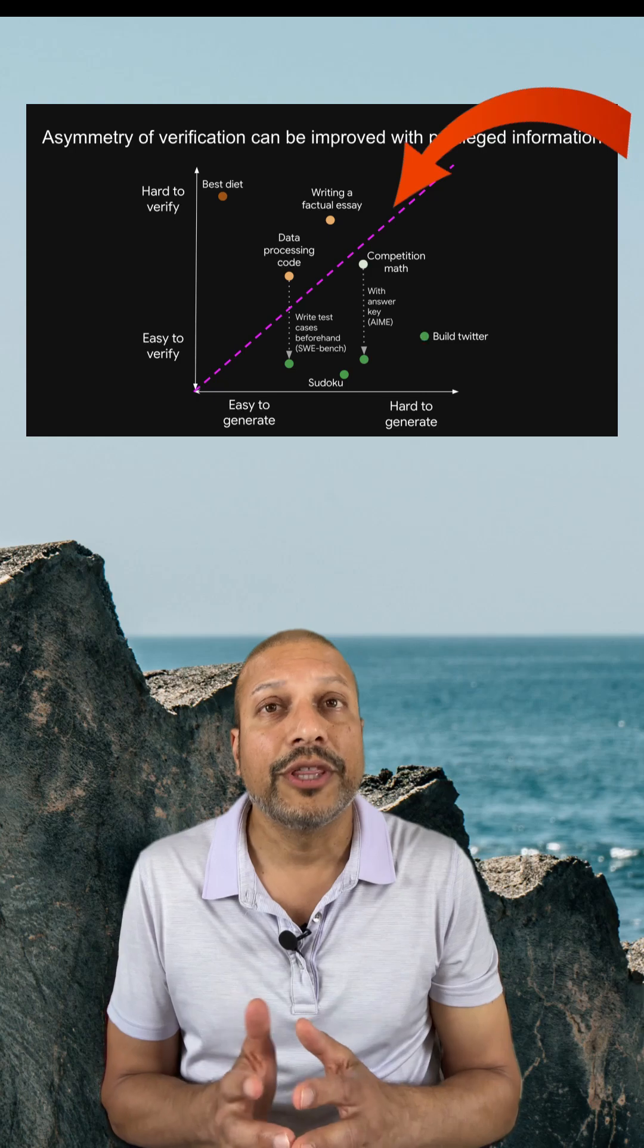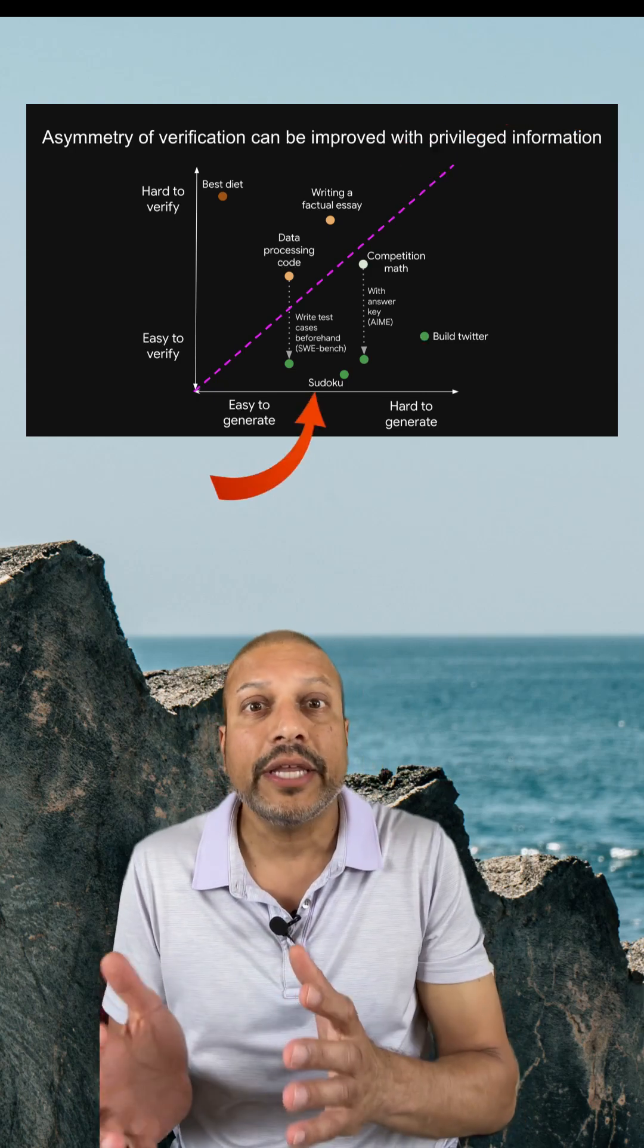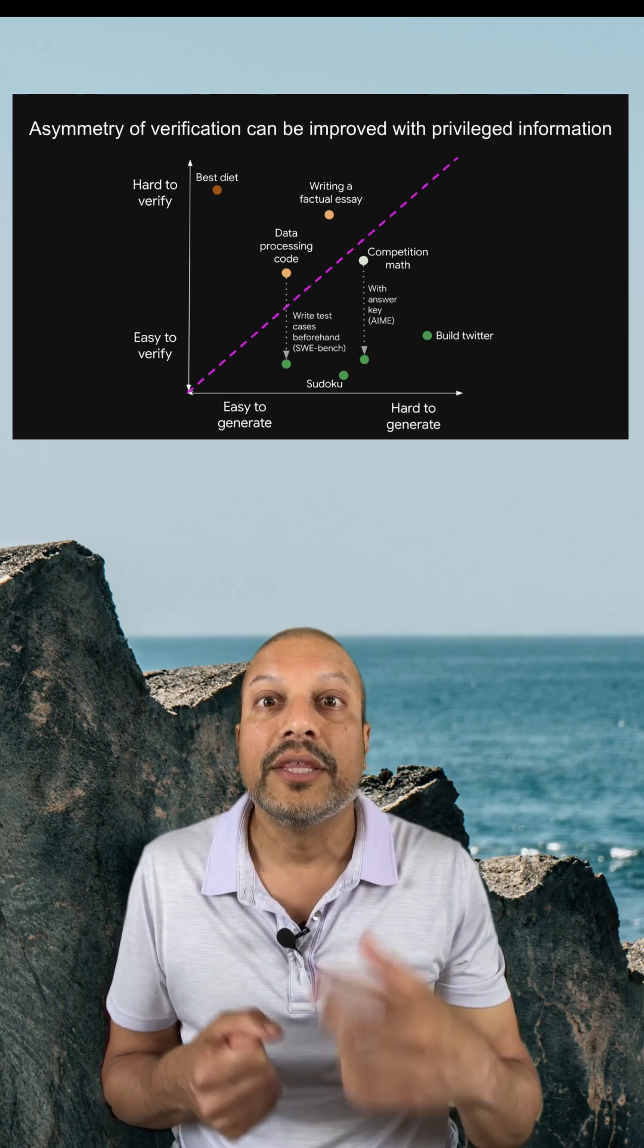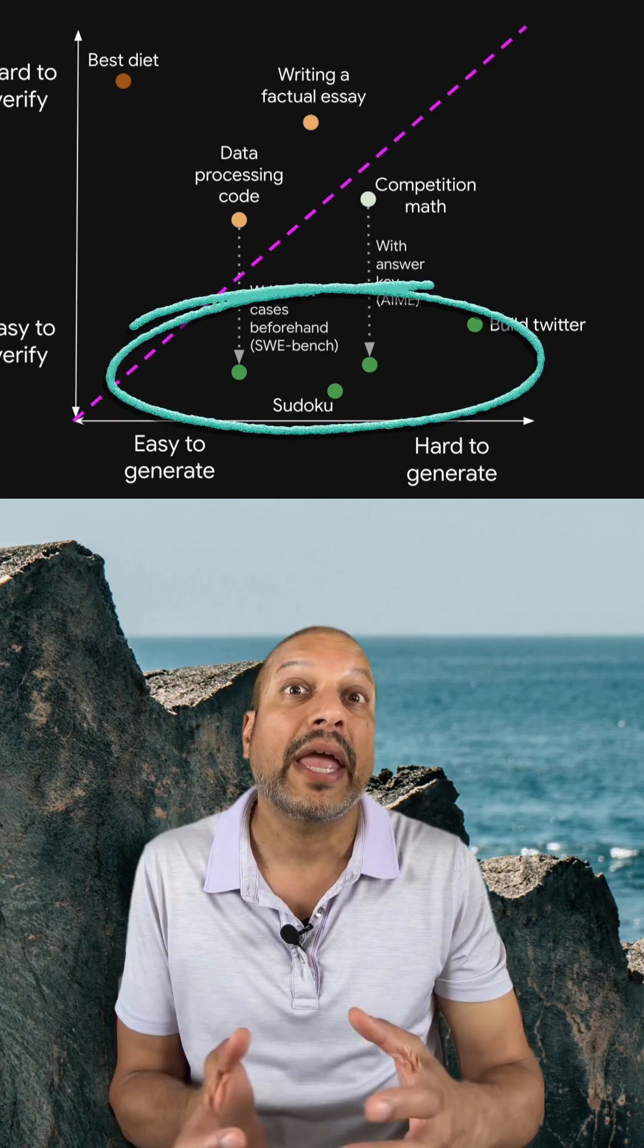But Wee points out a deeper truth. There's an asymmetry between solving and verifying. So generating a solution is just a start. More important is to check whether it's correct. This is where you want it to be easy, and this asymmetry shapes how AI can improve.